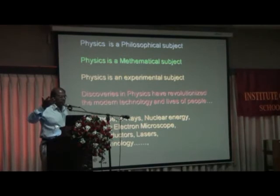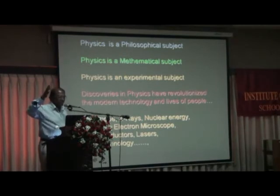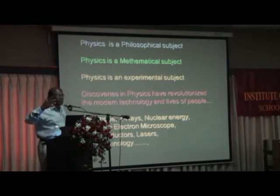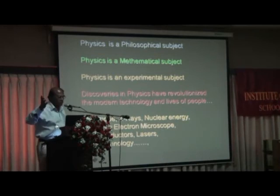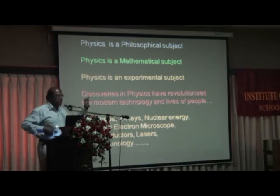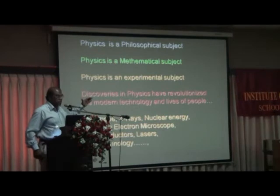Chemistry is experimental but has no philosophy and no mathematics. Biology is an experimental scientific discipline, with hardly any philosophy and no mathematics at all. But physics is a combination of all three things.